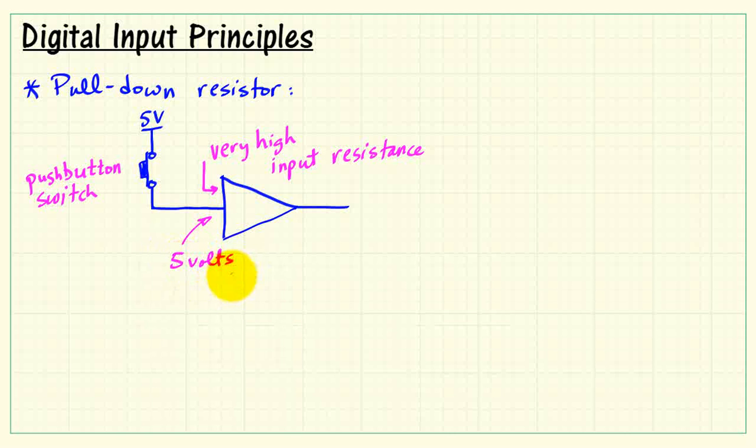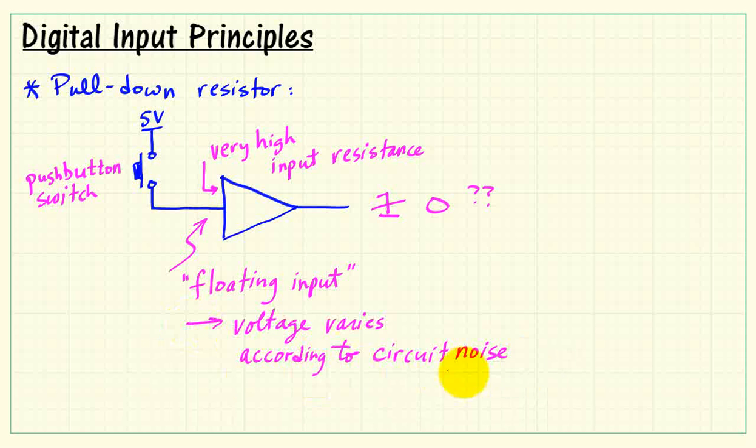When the push-button switch is closed, we've got a nice, solid connection of 5 volts to the digital input, and we get a clear indication of logic 1. But when the push-button switch is opened again, it's really not very clear what voltage the digital input is at. We ultimately want it to give us an interpretation of 0, but is that actually possible based on the circuitry I'm showing here? What we really have is a floating input, meaning that the input signal is not clearly connected to anything in particular. Its input voltage will vary considerably according to circuit noise and other extraneous signals.